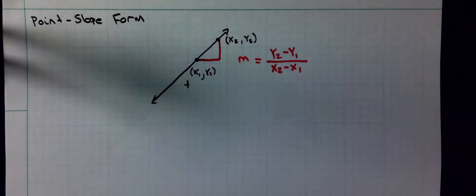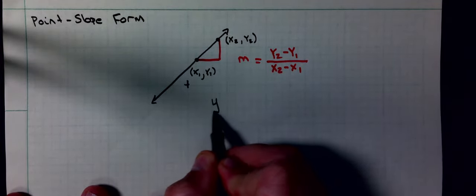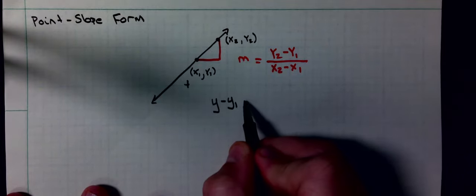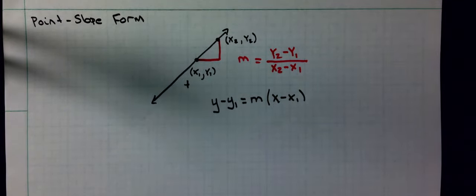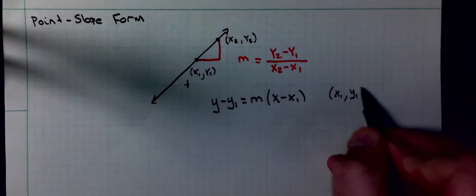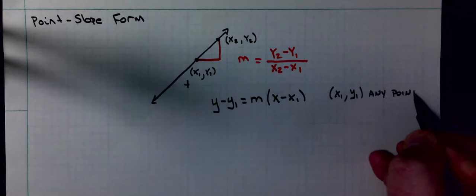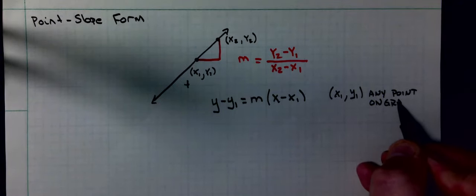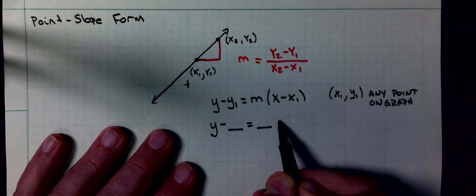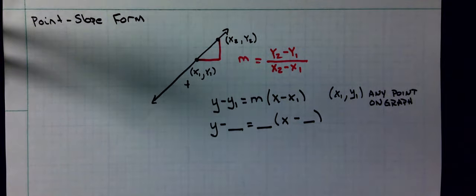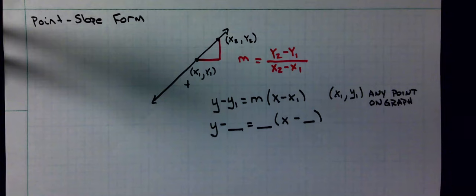Well, I don't have the y-intercept now. So let's come up with a template we can use to write the equation. That template is: y minus y1 equals the slope times x minus x1, where x1, y1 is any point on the graph. The way we're going to use this is we write y minus blank equals blank times open parentheses x minus blank, and fill in the blanks with the point and slope.